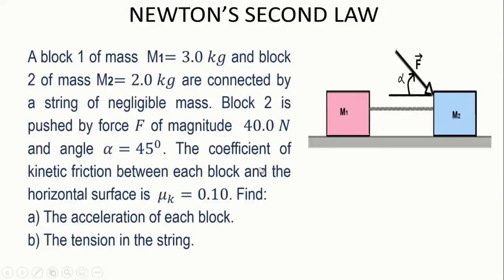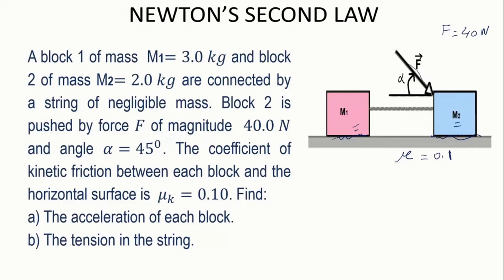In this example, we are going to use Newton's second law to find the acceleration of blocks M1 and M2. We apply a force F with a magnitude of 40 N. The surface is rough, with a coefficient of friction between each block and the surface of 0.1. The force is applied at 45 degrees with the horizontal surface. The first thing we need to do is draw a free body diagram for each object and use the second law to find the acceleration.